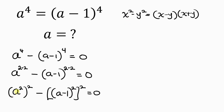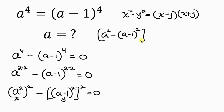That means a squared is our x and a minus 1 all squared is our y. So we have x minus y, that is a squared minus a minus 1 all squared, times x plus y, that is a squared plus a minus 1 all squared, equal to 0.